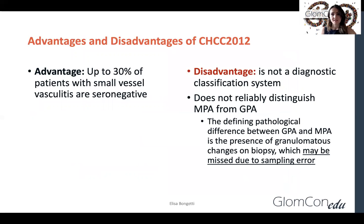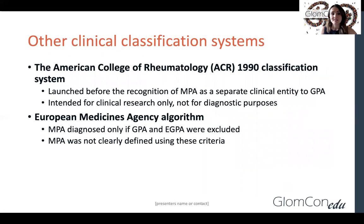The disadvantage of the Chapel Hill system is that it is not a diagnostic classification system, and it doesn't reliably distinguish between MPA and GPA because it relies on the absence of granulomatous lesions to diagnose MPA — however, these lesions may sometimes be missed due to sampling error on biopsy. Other classification systems include the American College of Rheumatology classification system, which was launched prior to when microscopic polyangiitis was recognized as a separate entity, as well as the European Medicines Agency algorithm, which also does not reliably distinguish MPA as a separate disease.